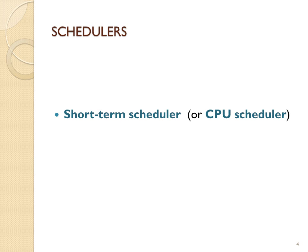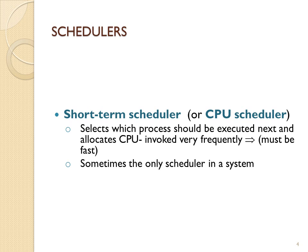The operating system will have a set of different schedulers to help with these tasks. The first scheduler, which all operating systems have, is called the short-term scheduler or the CPU scheduler. This selects from those processes in the ready state which process gets on the CPU next. All operating systems, even if they schedule processes in first-come first-served order, have a CPU scheduler.